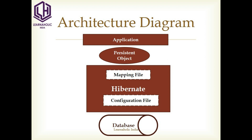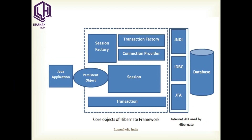The architecture is specified in this figure. The application is in the top layer, and after that the persistence object is placed. In between the application and database, there is Hibernate, which contains the mapping file and configuration file, and above Hibernate the persistence objects reside. Internally, the various core objects of Hibernate are described — with the Java application and database, Hibernate is placed in between. Below that is the transaction layer, then the session layer, then the session factory. Session factory and connection providers form the Hibernate framework. The internal APIs used by Hibernate are JNDI, JDBC, and JTA.